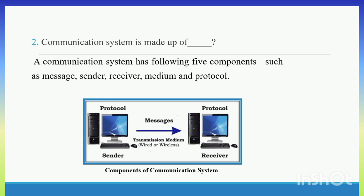The five components are: Message, Sender, Receiver, Medium, and Protocol. A diagram shows how all these components of the Communication System work together. Sender sends the message to the receiver through transmission medium by using a protocol. Transmission medium may be wired or wireless.